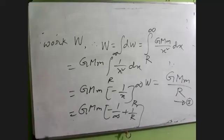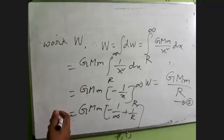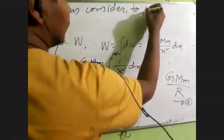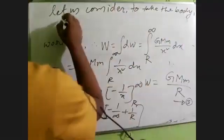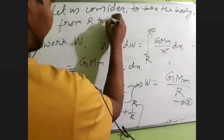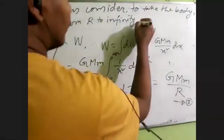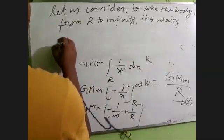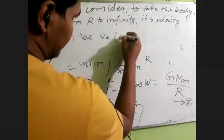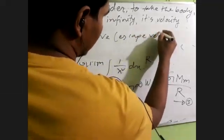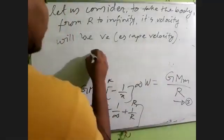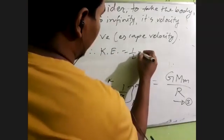Same distance — that is, to infinity — now a particular velocity, and escape velocity. So let us consider taking the body from R to infinity. Its velocity will be ve. Therefore, kinetic energy is half m ve squared.